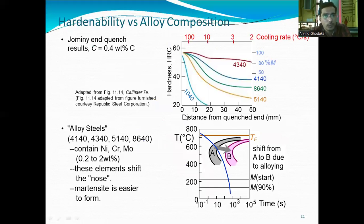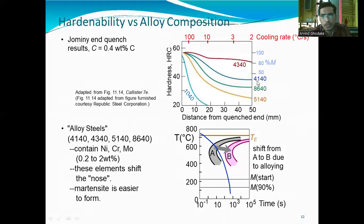For the Jomini End-Quench test with 0.4% carbon steel, the hardenability curve shows how hardness varies for different steel grades. The 1040 steel, 5140 steel, 8640 steel, and 4340 steel each show different hardness profiles from quench end to free end. The alloy steel containing nickel, chromium, and molybdenum shows the cooling curve for those alloys, with hardness increasing in the martensitic phase.